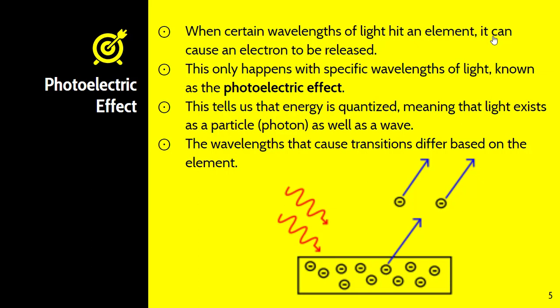The wavelengths that cause transitions differ based on the element. If you've ever seen an atomic spectra before, you know that different wavelengths of light are produced based on the energy of the photon that is released.